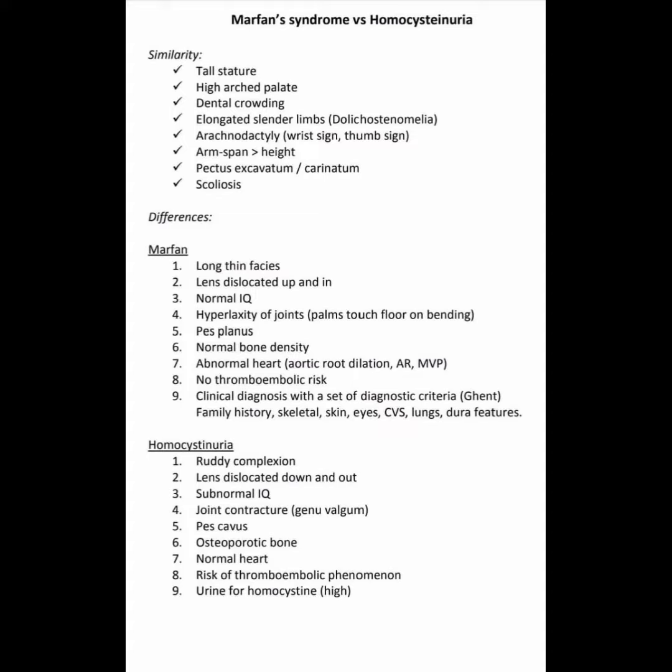Homocystinuria features are: number one, ruddy complexion; number two, lens dislocated downwards and outwards; number three, subnormal IQ; number four, joint contracture with genu valgum; number five, pes cavus; number six, osteoporotic bone; number seven, normal heart; number eight, risk of thromboembolic phenomenon.